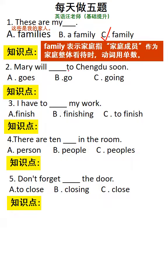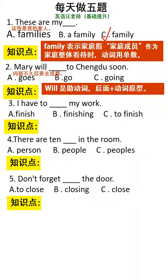第二题：Marry will go to Chengdu soon. Marry将要去成都。这里will是助动词，助动词后加动词原形，因此选择B选项。